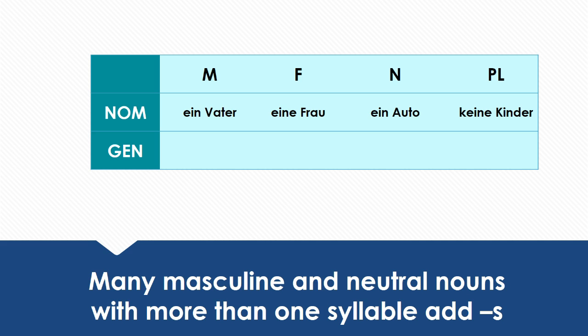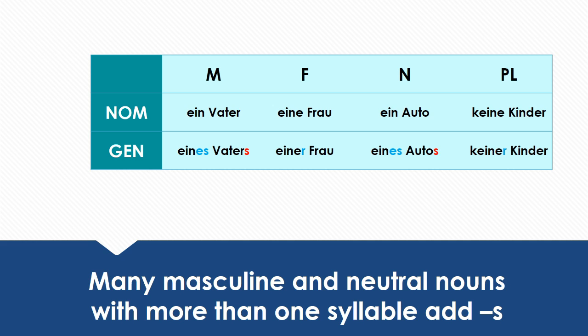Many masculine and neutral nouns with more than one syllable add an S in the genitive case. Let's take a look at some examples: ein Vater, eine Frau, ein Auto, keine Kinder. Now let's take a look at what happens in the genitive case: eines Vaters, einer Frau, eines Autos, keine Kinder. Note that the ER ending sounds like a German A sound — so we're saying 'einer' and 'keine.'